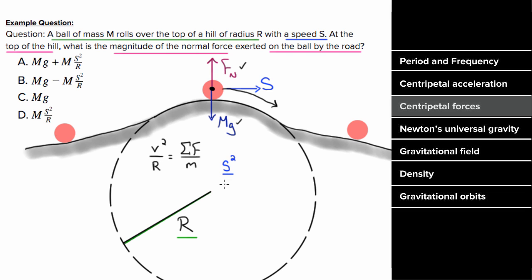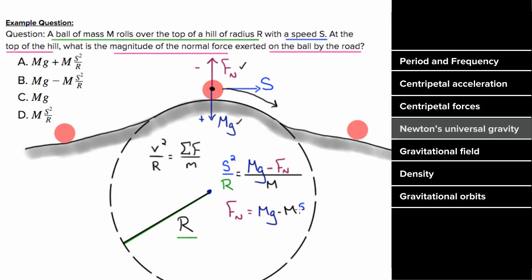To figure out how much less, we use Newton's second law with the formula for centripetal acceleration. The speed is s and the radius is r. Gravity is a positive centripetal force since it points toward the center of the circle. The normal force is a negative centripetal force since it points radially away from the center. Solving for the normal force gives the force of gravity minus m s squared over r, which makes sense because the normal force has to be less than the force of gravity.